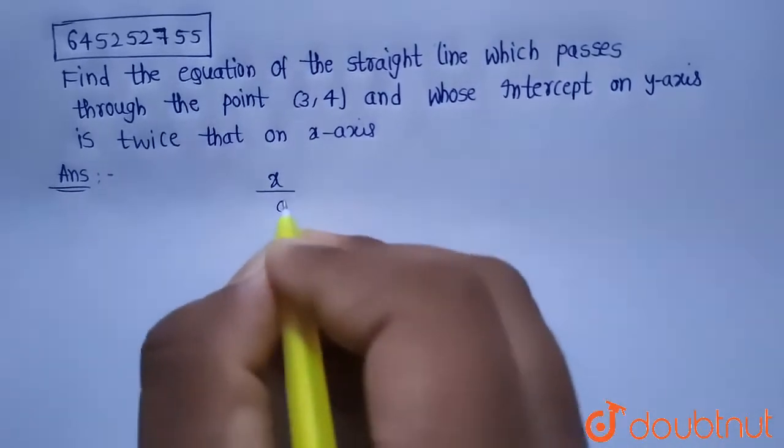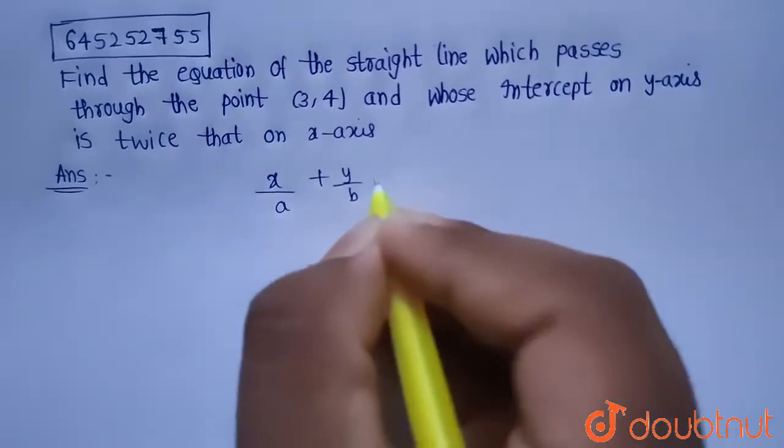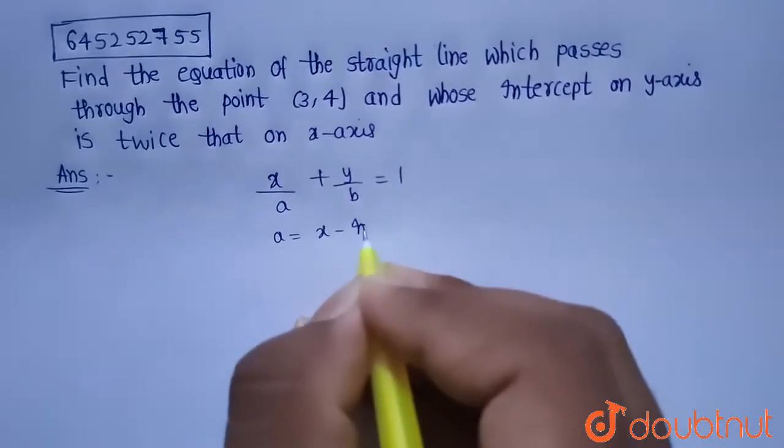We know that equation of the line is x/a + y/b = 1, where a is the x-intercept and b is the y-intercept.